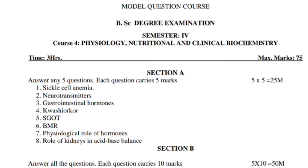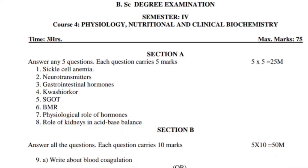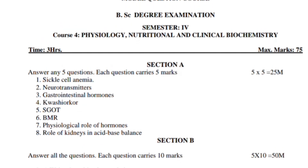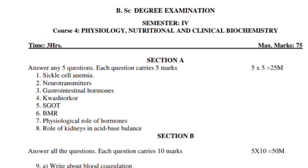So first, the short questions: sickle cell anemia, neurotransmitters, gastrointestinal hormones, kwashiorkor, SGOT, BMR, physiological role of hormones, and the role of the kidney in acid-base balance.